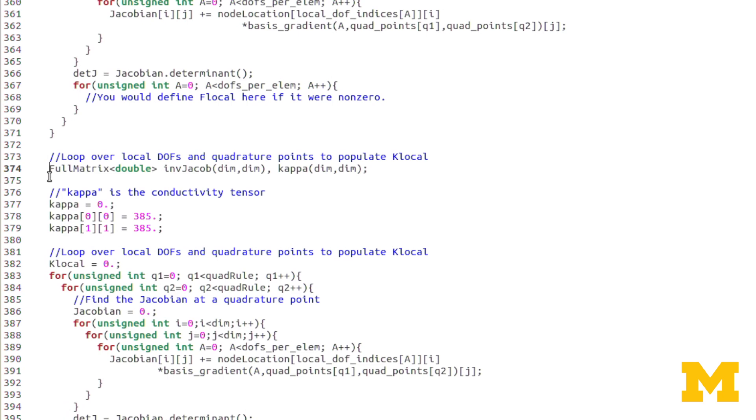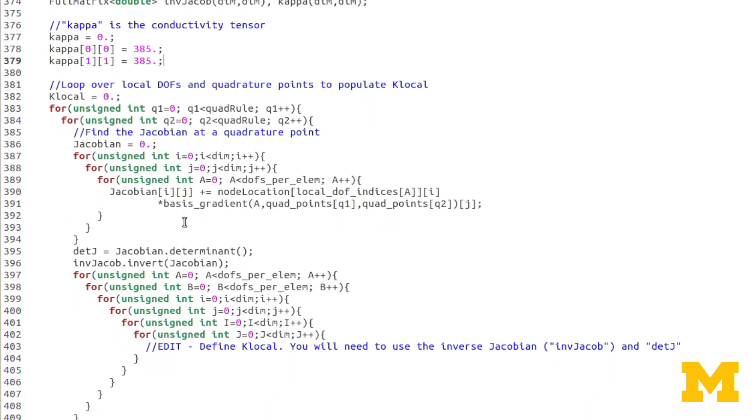Now, for K local, I've also created a full matrix called M Jacobian, which will store the inverse of the Jacobian. And again, we need that. I'll go into that a little bit more on the board in a second. I've also created this full matrix kappa, which will be our conductivity tensor. And in the assignment, it's already defined for you that it's a diagonal matrix with the value of 385. So now let's look at K local itself. And actually, before we get into that, again, K local will use Jacobian. It uses the determinant of the Jacobian, which actually comes into play with the quadrature, numerical quadrature. And so that's where it will come into play.